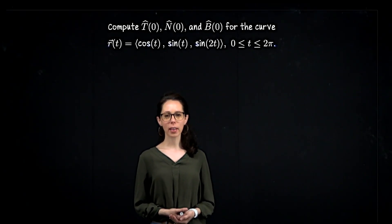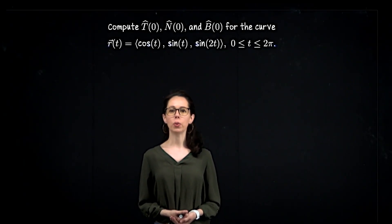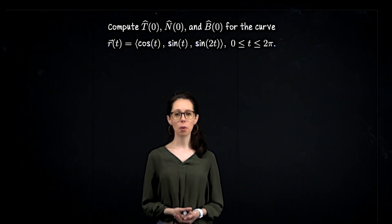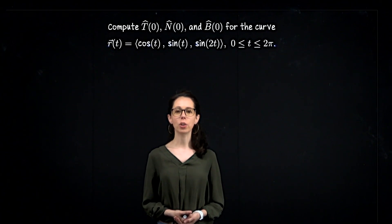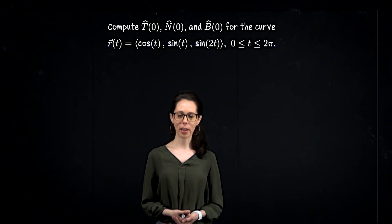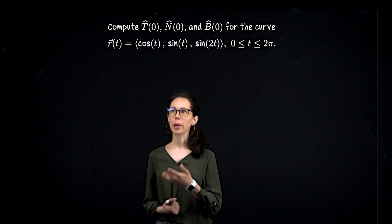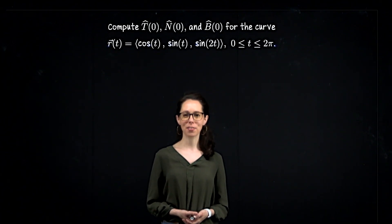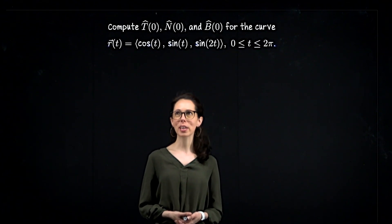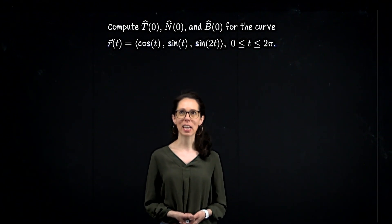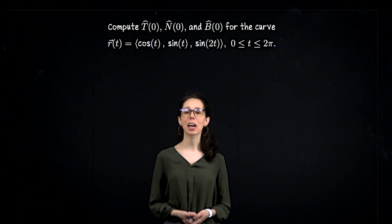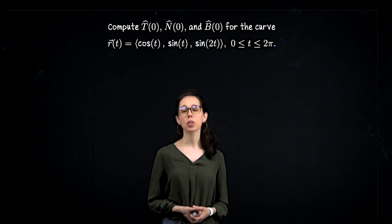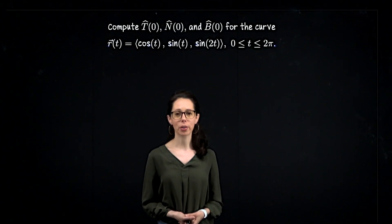In this exercise, I would like to compute the unit tangent vector, the unit normal vector, and the unit binormal vector for the parametrized curve described as r of t equals cosine of t, sine of t, sine of 2t, and we are parametrizing this curve from 0 to 2pi.